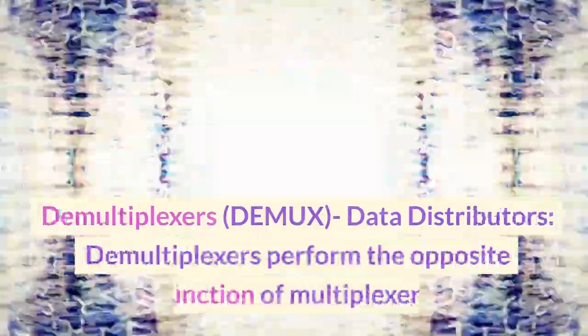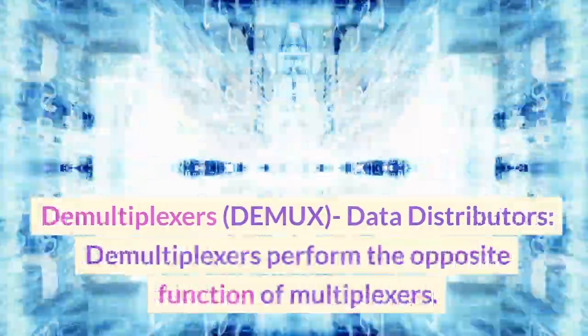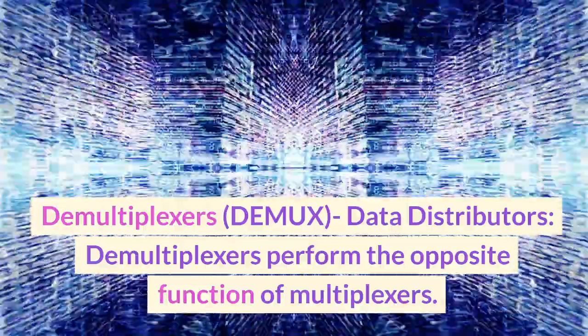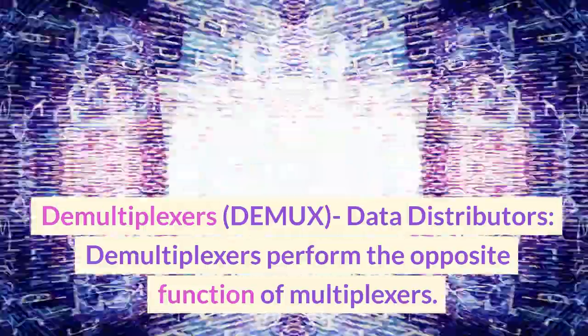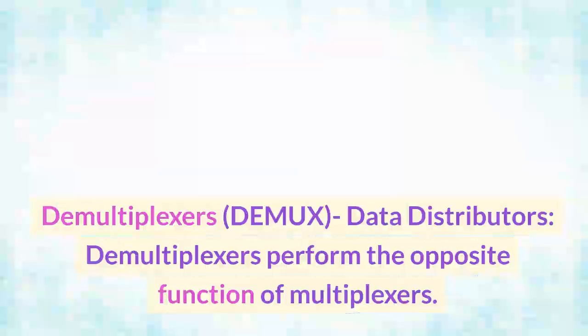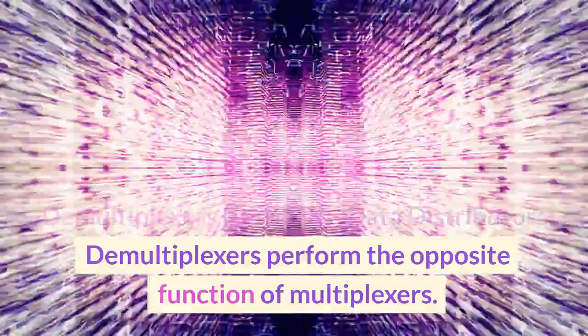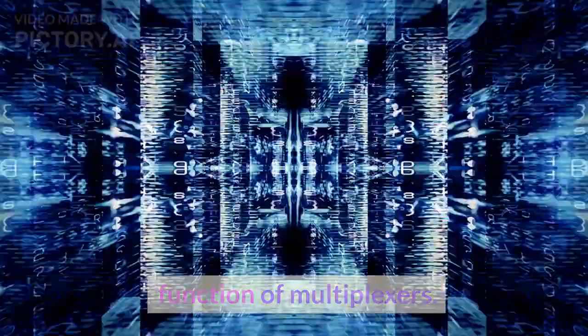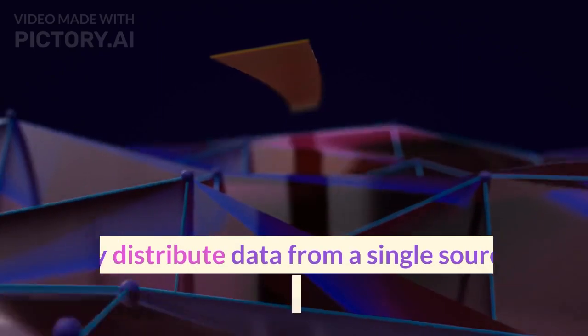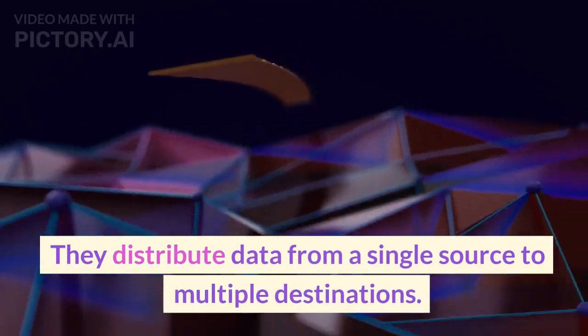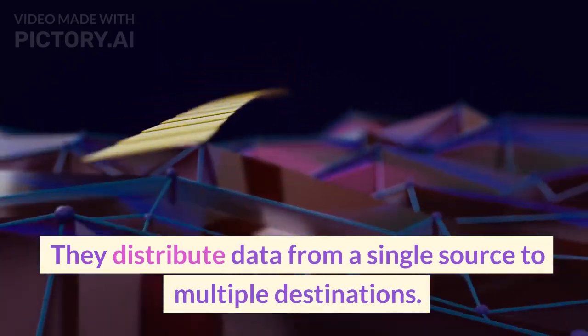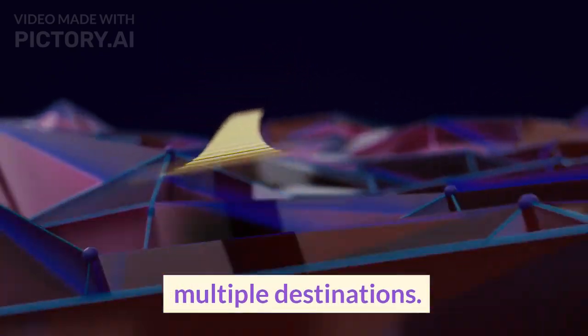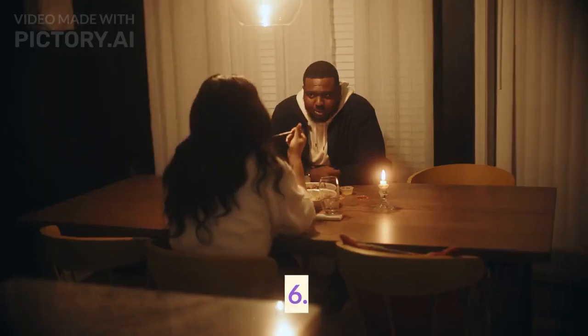5. Demultiplexers (Demux) — data distributors. Demultiplexers perform the opposite function of multiplexers. They distribute data from a single source to multiple destinations.